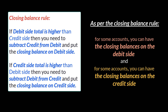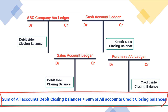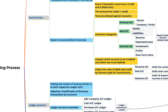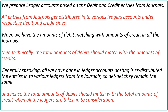For some accounts the closing balance will be on the debit side and for some accounts on the credit side. But if you sum all the closing balances of all the accounts, the sums would exactly match each other. Why? It is because when we made the entries we made two entries for each transaction. The journal entry rule says each entry should have two entries — one for debit and one for credit — and the amount of credit should match the amount of debit. So if you sum the debit closing balances and the credit closing balances, they would also match.